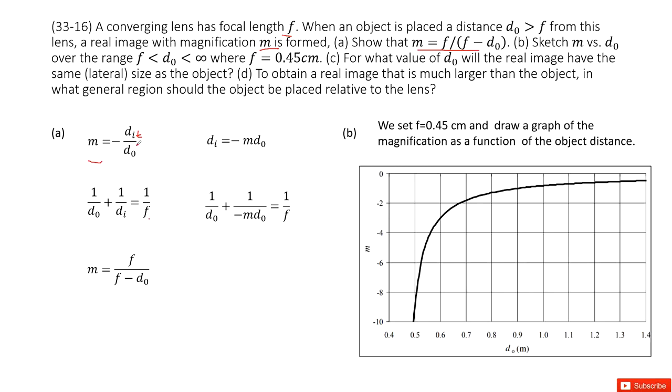So from this one, we can see we can replace dᵢ as negative m d₀. So we put the dᵢ as negative m d₀. Solve this equation. You can get the function as we proved.